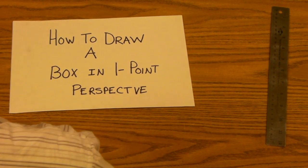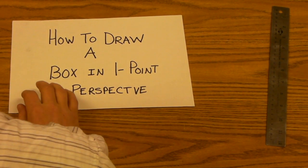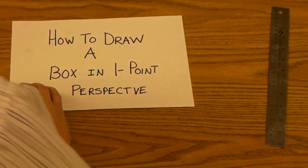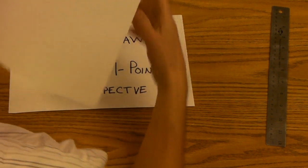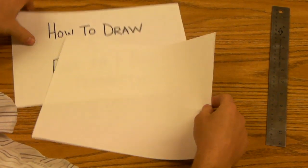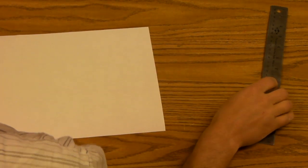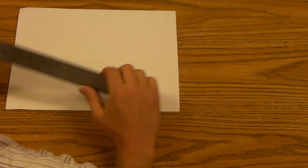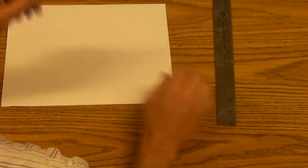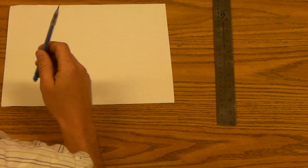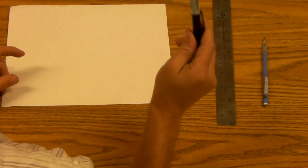How to draw a box in one point perspective. First thing you need to do is figure out your tools. In our case we're going to use a ruler. You can use a pencil, but for the sake of this video I'm going to use a sharpie — an ultrafine tip.